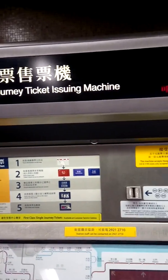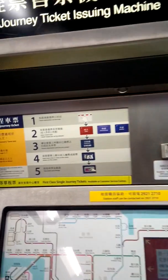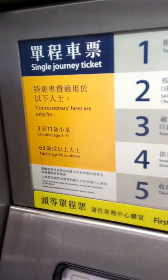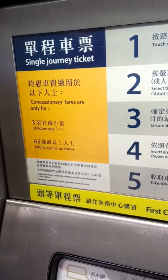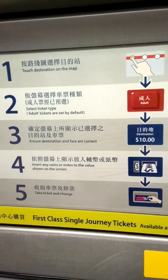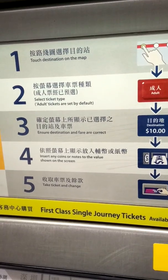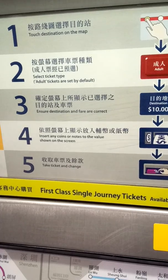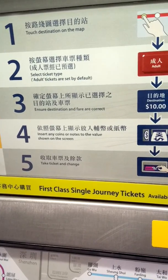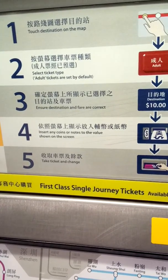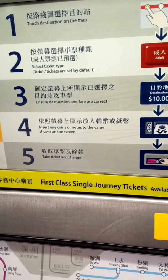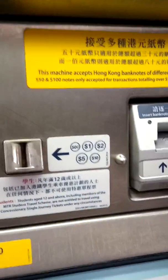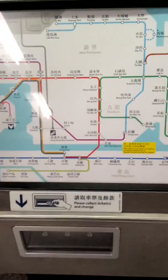Here is a single journey ticket issuing machine and I will use this. Select your destination on the map, then select ticket type — adult tickets are selected by default. Ensure destination and fare are correct, then insert any coins or notes to the value shown on the screen, take your ticket.